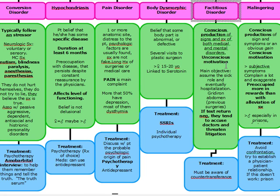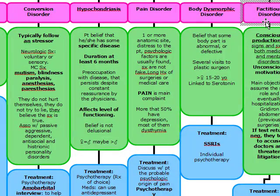Factitious disorder versus malingering is commonly confused. In factitious disorder, the motivation is unconscious; in malingering, it is conscious. Factitious disorder is more commonly seen in men and in healthcare workers. Their main objective is to assume the sick role and get hospitalized. Key point: if tests return negative, these patients tend to accuse doctors and threaten litigation. A classic example is Munchausen's disease.